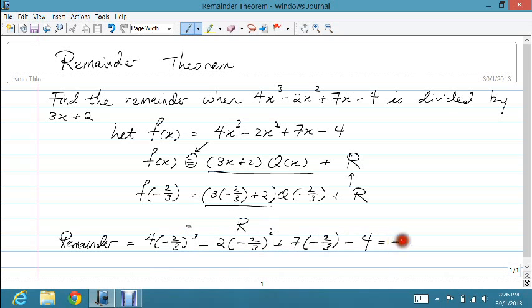And if you work it out you'll get negative 10 and 20 over 27.